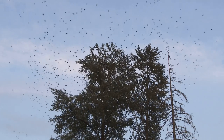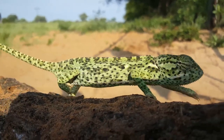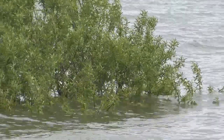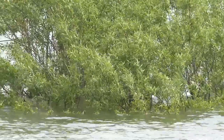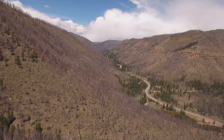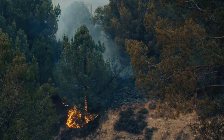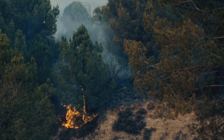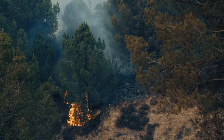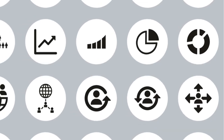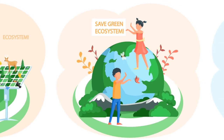Populations are in constant flux, ebbing and flowing in response to environmental changes, predator-prey relationships, and competition for resources. This dynamic nature is essential for the long-term survival of species. Natural events such as floods, droughts, and wildfires can significantly impact population size and distribution, creating opportunities for some species while posing challenges for others. For instance, a forest fire may devastate a population of trees but create ideal conditions for fire-adapted plants to thrive.